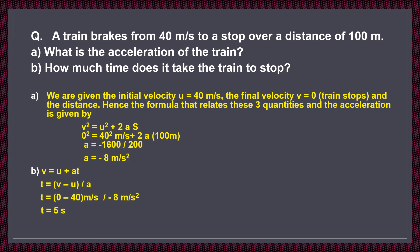Part B: how much time does it take the train to stop? Using V equals U plus AT and applying the known values, the time is found to be 5 seconds.